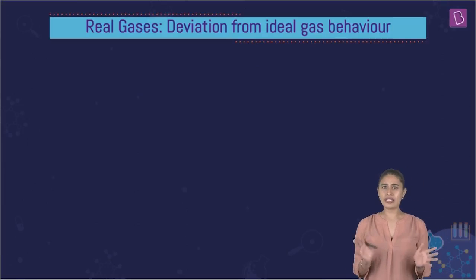PV is equal to NRT at all ranges of temperature and pressure if any gas follows, it's an ideal gas. If it doesn't follow, it's a real gas.